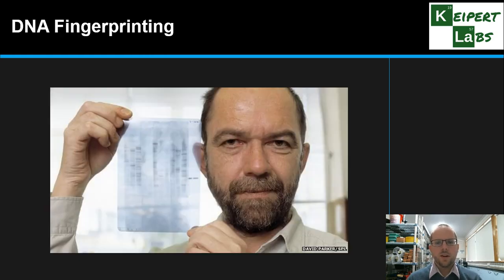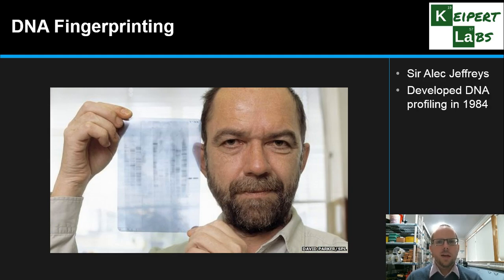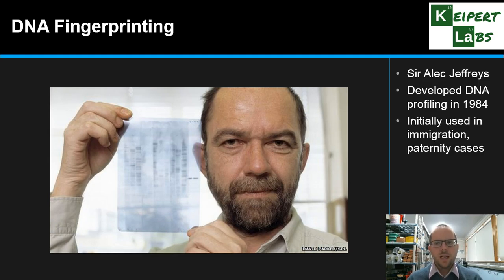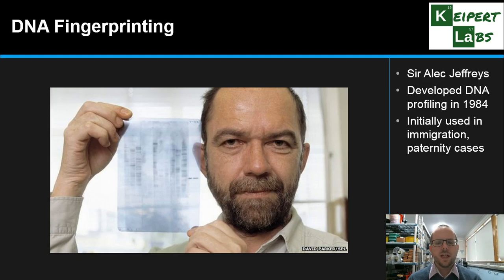Around this time, we had the invention of the technique called DNA fingerprinting by Sir Alec Jeffries, in the mid-80s around 1984, developing DNA profiling. This is a more recent photo of him with a typical DNA profile image. Initially this technique had applications in legal cases involving immigration and paternity, showing family relationships and relatedness using highly variable mini-satellite areas of the DNA strand, identified through his research at the University of Leicester.